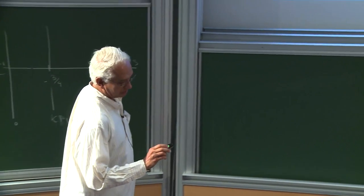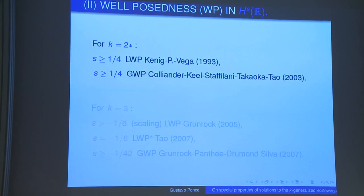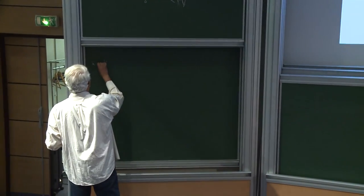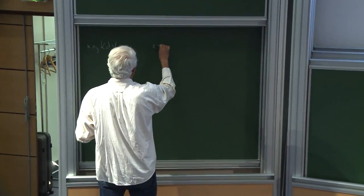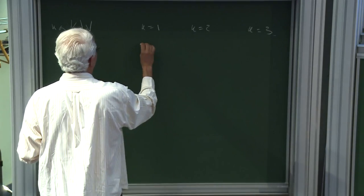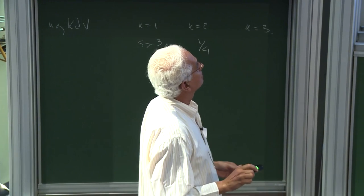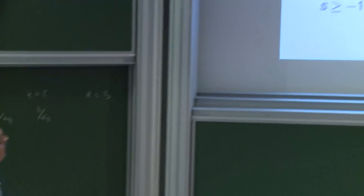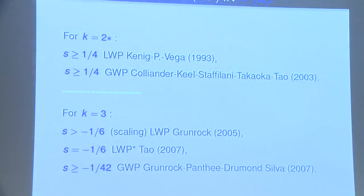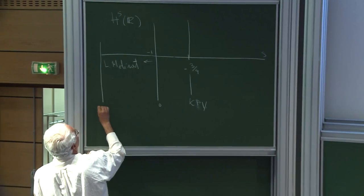For power 2 you have s = 1/4. Let me write the numbers for the generalized KdV: if k is 1, 2, or 3, then s = -3/4. For power 2, s = 1/4. For power 3, the local result is s = -1/6, which is the scaling. By the way, the scaling for k=1 is -3/2. So you have an example where you don't reach the scaling.